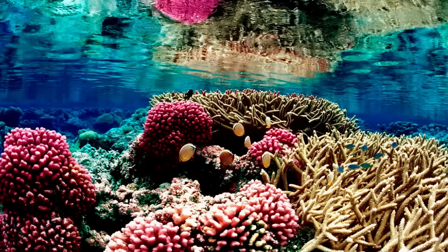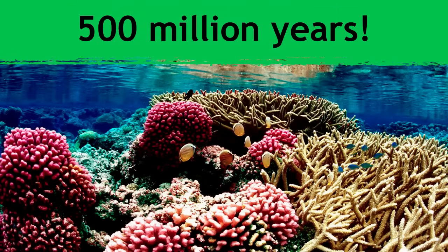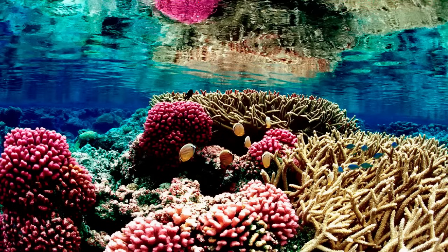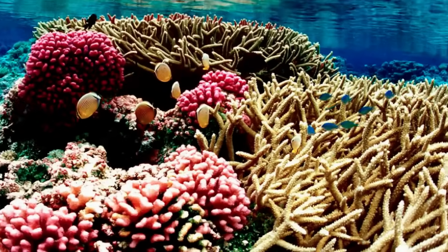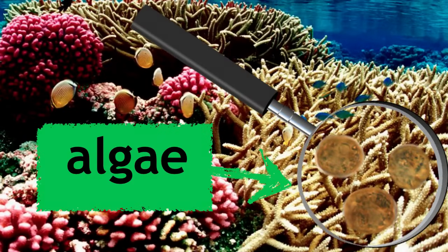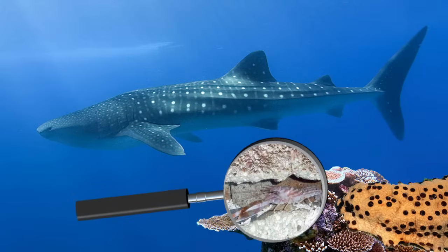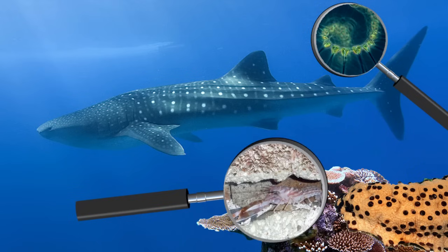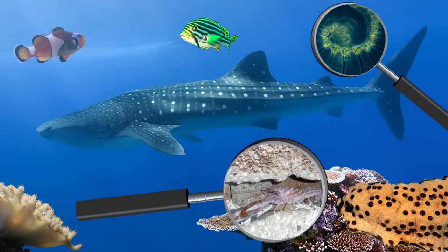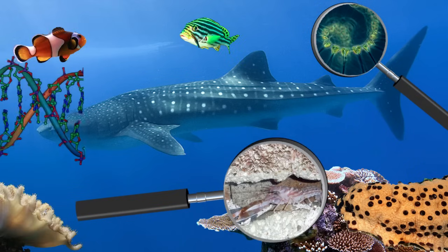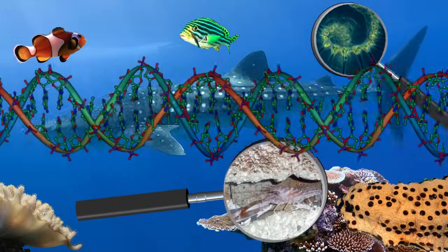Coral reefs are an excellent example of a diverse ecosystem that has existed for as many as 500 million years. The coral actually has a symbiotic relationship with tiny algae, which are the producers in the ecosystem. From whale sharks to pistol shrimp, from sea cucumbers to phytoplankton, this ecosystem is teeming with more organisms and interactions than there are bases in a tiny little clownfish's DNA.